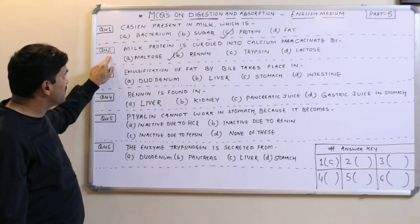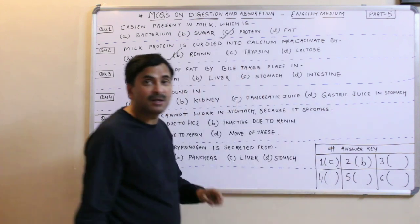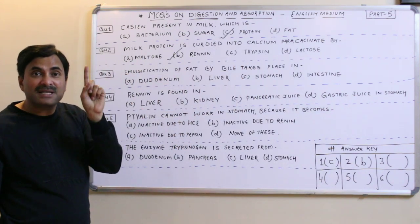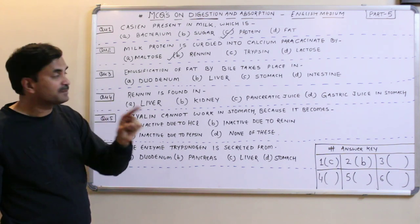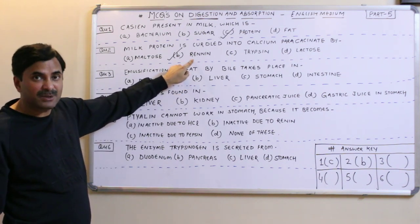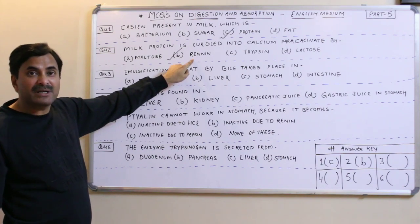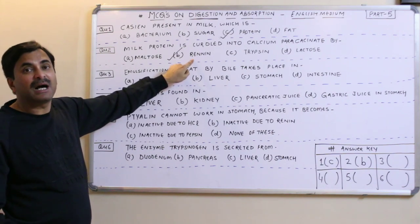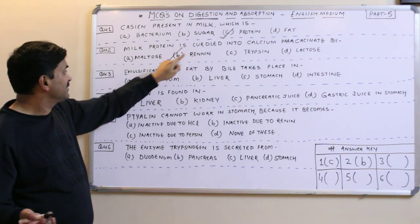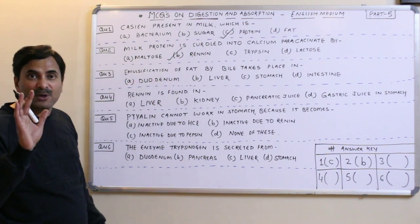Question number two has the answer B: renin. Don't be confused — RENIN (R-E-N-I-N) is secreted by the kidney, but renin (R-E-N-N-I-N) is found in the stomach and converts the milk protein casein into the curd-like substance calcium paracacinate. Now, question three is about emulsification of fat.